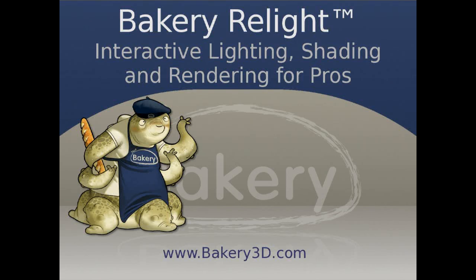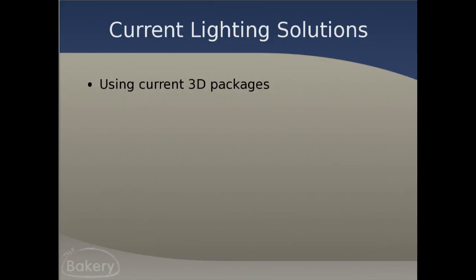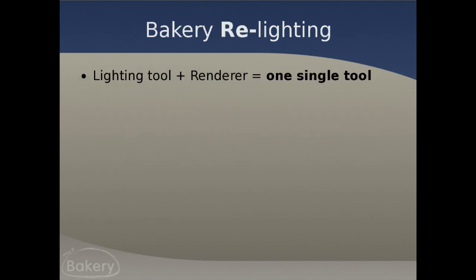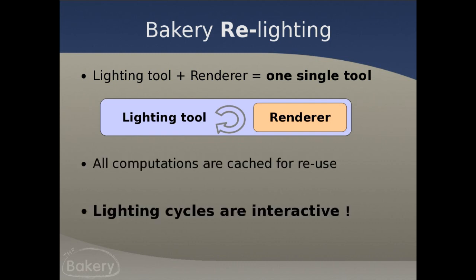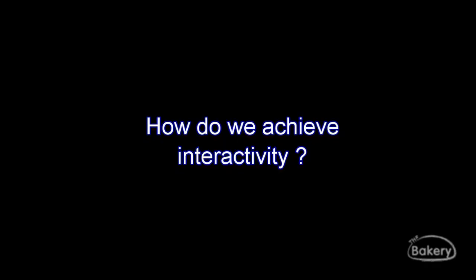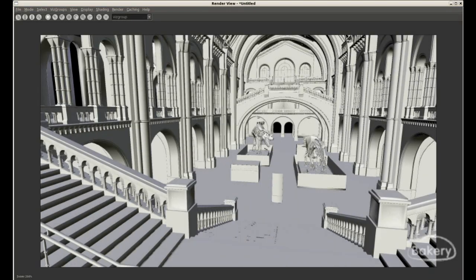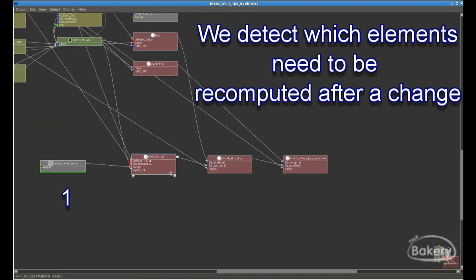Bakery Relight is an interactive 3D lighting and rendering software that enables artists and technicians to complete the entire creative process in a 3D environment. Relight's approach is completely different than other software solutions — it integrates lighting and final rendering into a single software package. This technology allows Relight to be smart about caching, to avoid redoing the same computation multiple times, making it very fast.